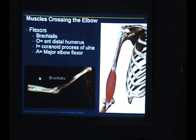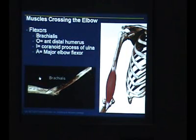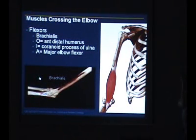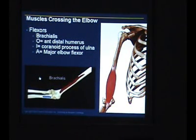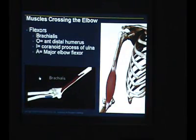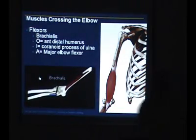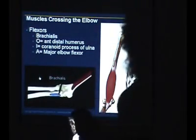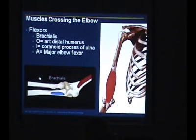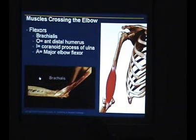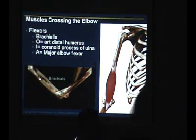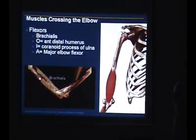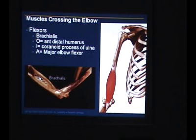Here's the brachialis muscle. It arises from the broad area on the anterior humerus and is inserted here on the coronoid tuberosity. The action of the brachialis is to flex the elbow, which it does equally well whether the forearm is pronated or supinated.